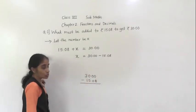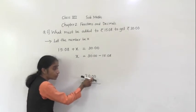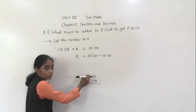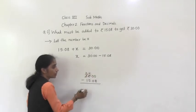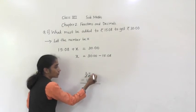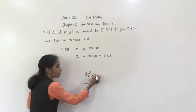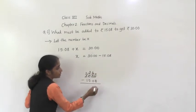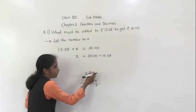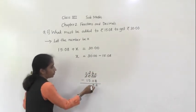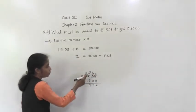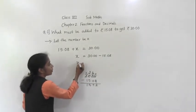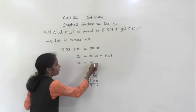So subtraction: 30.00 minus 15.08. 0 minus 8 is not possible, so we borrow. He doesn't have, so he borrows from him. He gives — so here remain 2. How much you got now? 10. So here will remain 9. Borrow from him. Here will remain 9. 10 minus 8 is 2. 9 minus 0 is 9. Point. 9 minus 5 is 4. And 2 minus 1 is 1. So what we got? X is equal to 14.92.